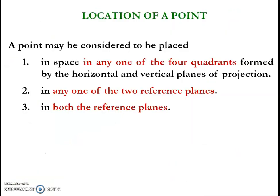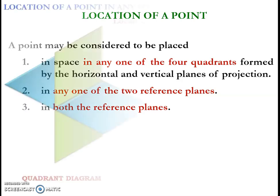Now let us see the possible locations of the points with respect to the principal plane. In the first case, the point may be considered to be located in any one of the four quadrants. In the second case, the point may be located in any one of the reference planes. And in the third case, the point may be located in both the reference planes.